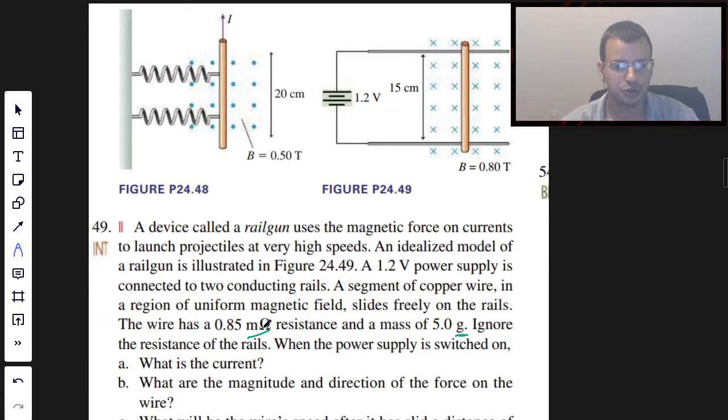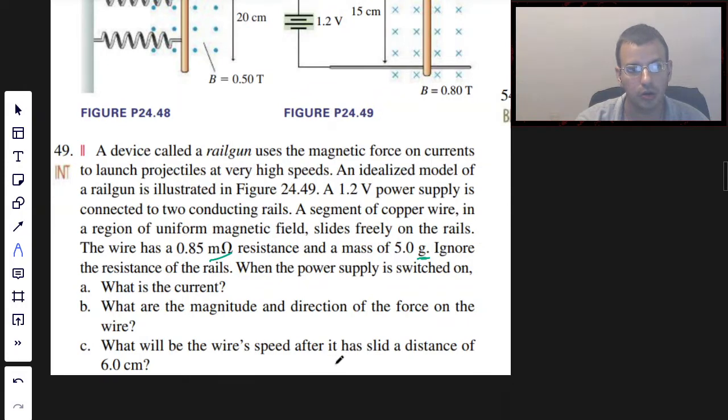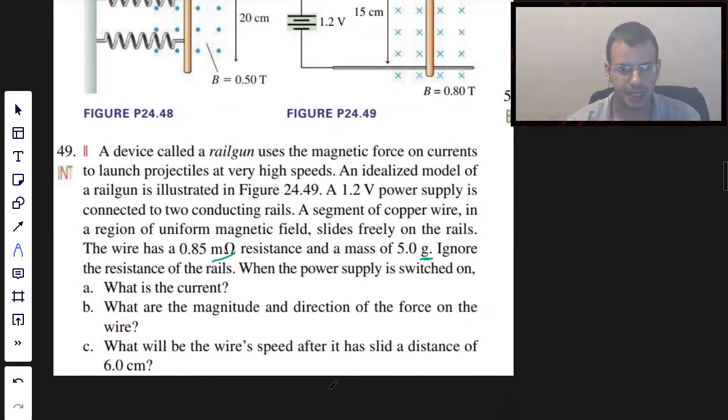Ignore the resistance of the rails. When the power supply is switched on, what is the current? Okay, so we are just going to step through this and follow the steps they give us. Current is V equals IR, Ohm's law.